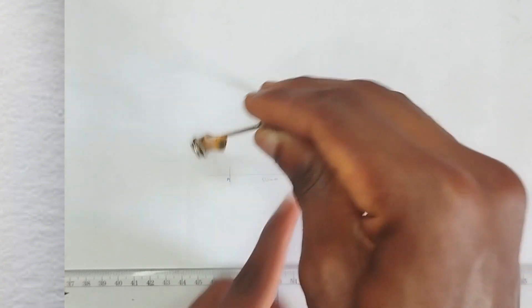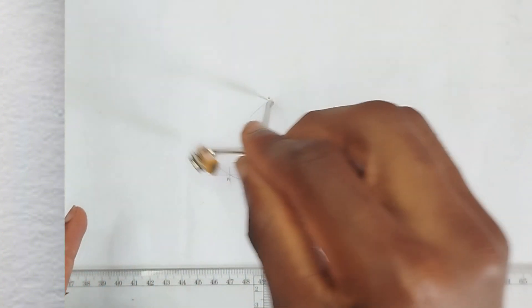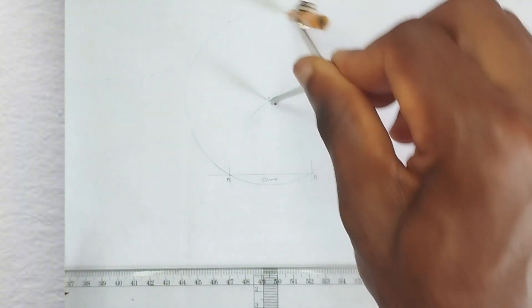Then from point O we are going to be drawing a circle which will pass through the points A and B. So we'll draw it like this. This is our circle.